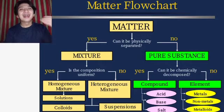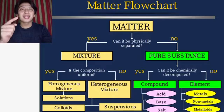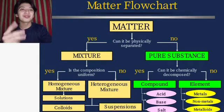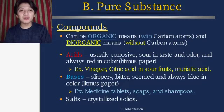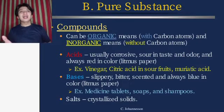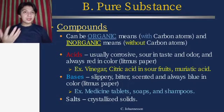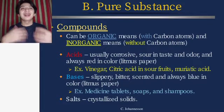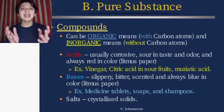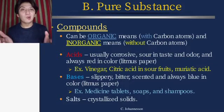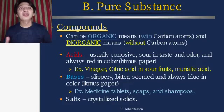Under compounds, we have acids, bases, and salts. Compounds can be organic — meaning with carbon atoms — or inorganic — meaning without carbon atoms. Organic substances have carbon in their composition, while inorganic substances do not have carbon in their composition.